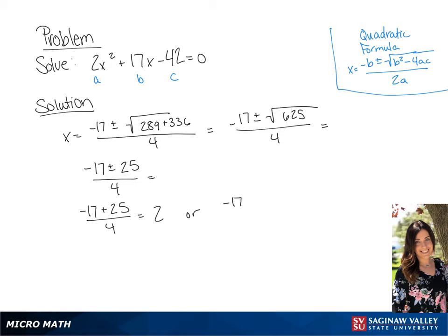Or negative 17 minus 25 over 4, which is going to give us an answer of negative 21 over 2. So our answers are 2 or negative 21 over 2.